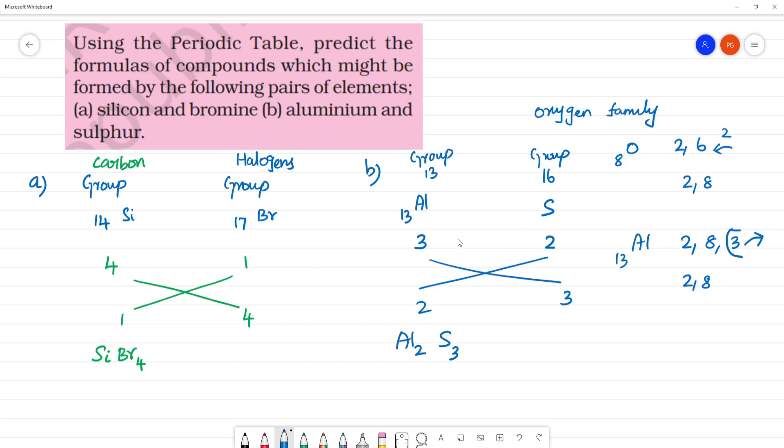This is using the group number. Group 13 elements plus 3 oxidation state, carbon family 4 oxidation state, halogens oxidation state 1. In the periodic table, we will write.